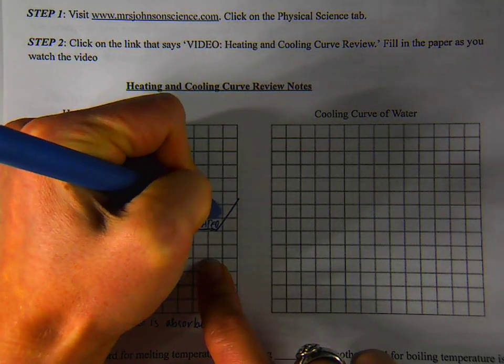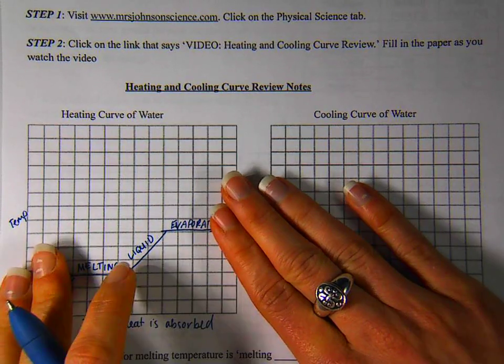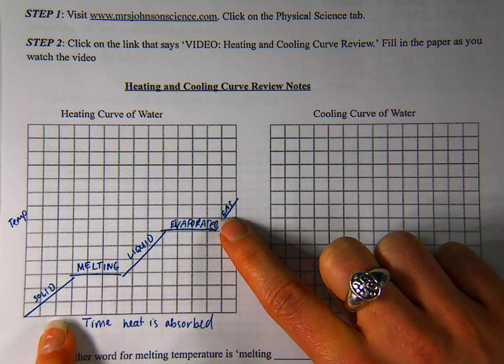It boiled or evaporated into a gas. And again, as it evaporated, we should have seen relatively little temperature increase. Your graph for the lab probably just looked like these three pieces. You probably didn't have much on either end here and that's okay.